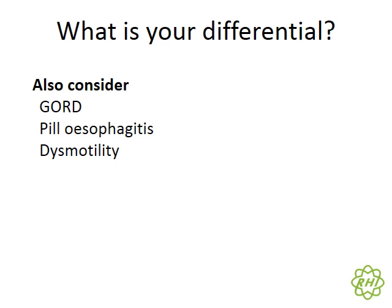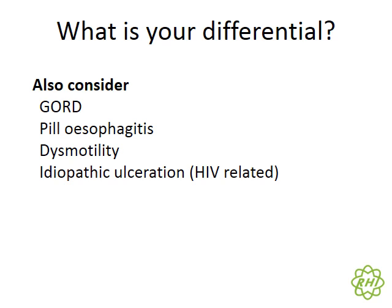Dysmotility is common in the HIV-negative population and can also affect HIV-positive patients. Idiopathic ulceration can occur in very immunocompromised patients — this is not common and is a diagnosis of exclusion when biopsied ulcers have no identifiable cause. Malignancies such as Kaposi's sarcoma can affect any part of the GI tract; notably, about 15% of KS patients have no visible skin lesions.